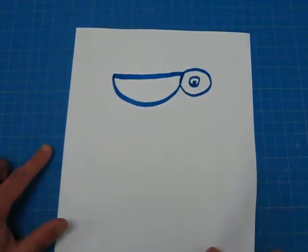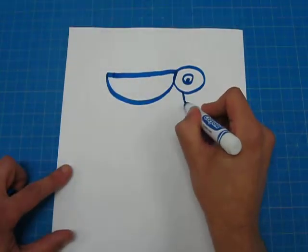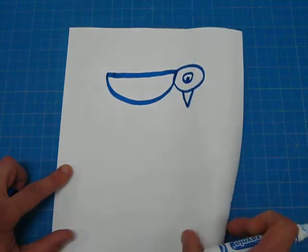If you turn your paper like this, you can make a V. Let's go back.